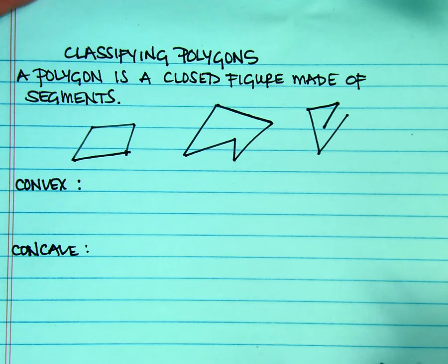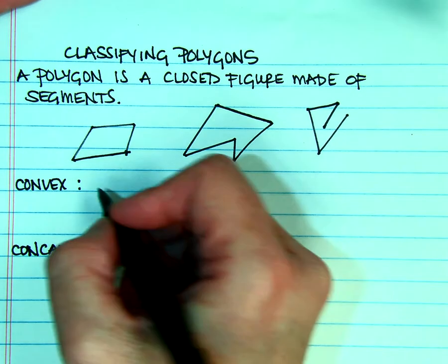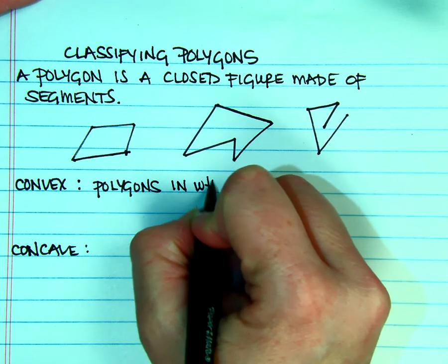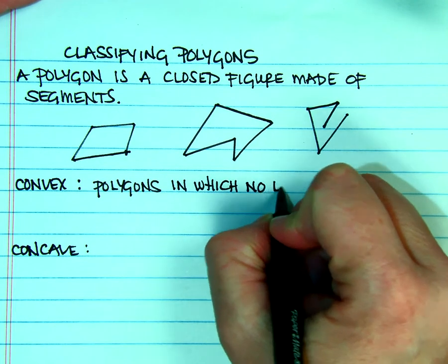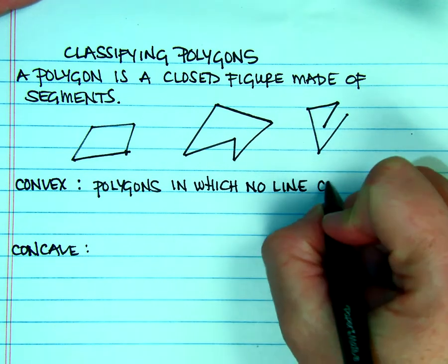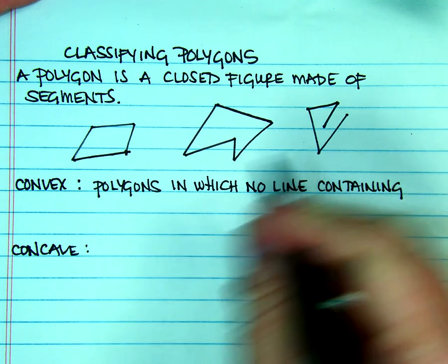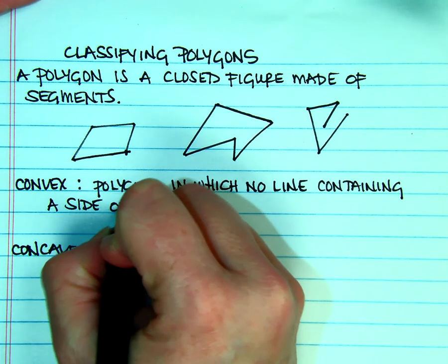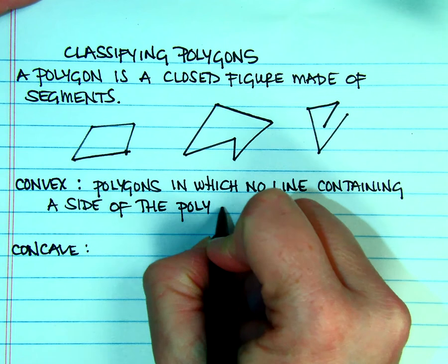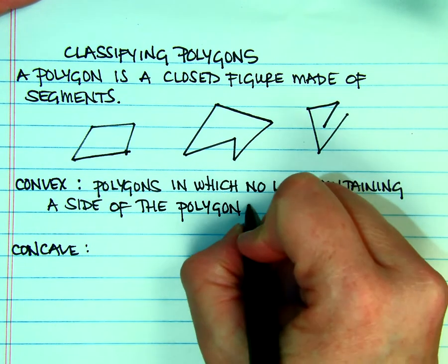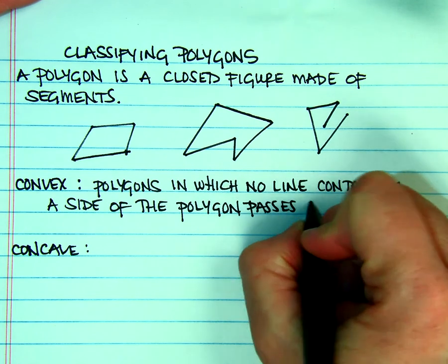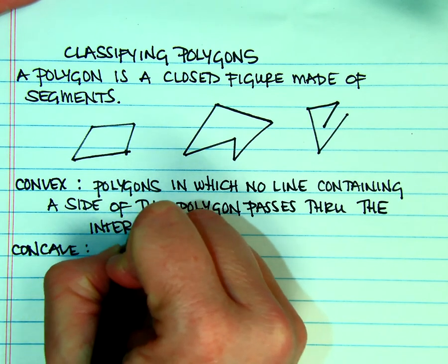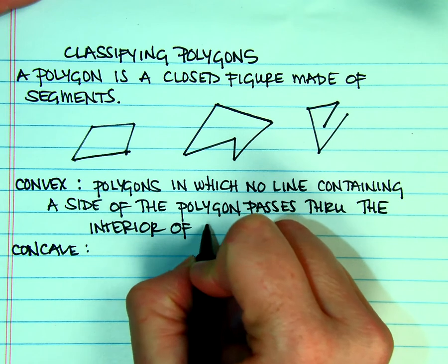Convex polygons are polygons in which no line containing a side of the polygon passes through the interior of the polygon.